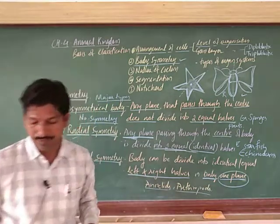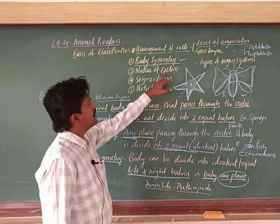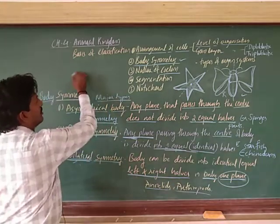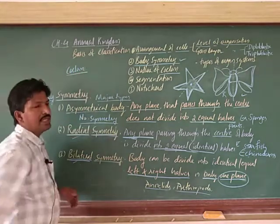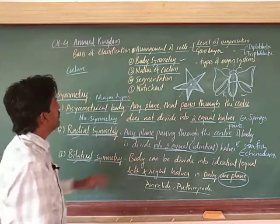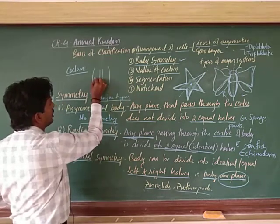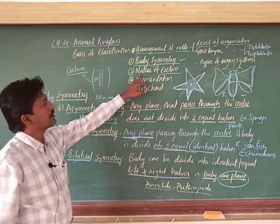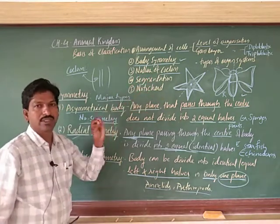Next is the nature of coelom. Coelom is a body cavity. It is the space between the gut - the digestive tract - and the body wall. In the next video, we will discuss in detail the nature of coelom, segmentation, and notochord. Thank you, students.